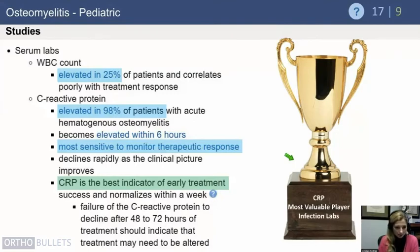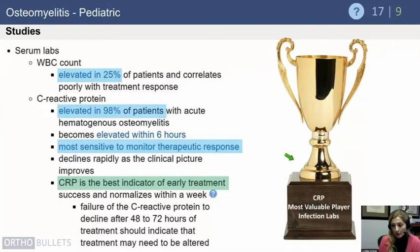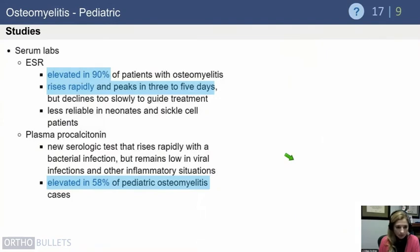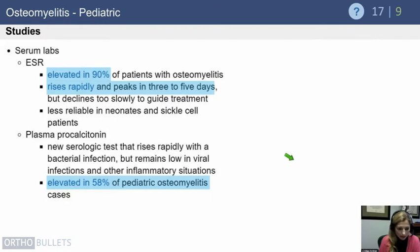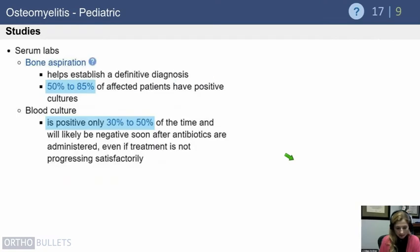Regarding labs, CRP is the most valuable marker to follow. White blood cell count is not always elevated in osteomyelitis, but CRP is elevated with very rare exception, rises quickly, and is the most sensitive indicator of early treatment response. ESR is usually elevated and rises rapidly, but normalizes very slowly — making it difficult to gauge whether antibiotics or surgery are working. Procalcitonin is an emerging test but has only about 60% sensitivity.